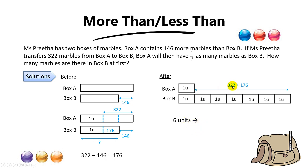So six units will be 322 plus 176, which is equal to 498. One unit will be 498 divided by 6, which is 83. The question asks for the number of marbles in Box B at first, so you need to take 83 plus 176, and you will get a final answer of 259 marbles.